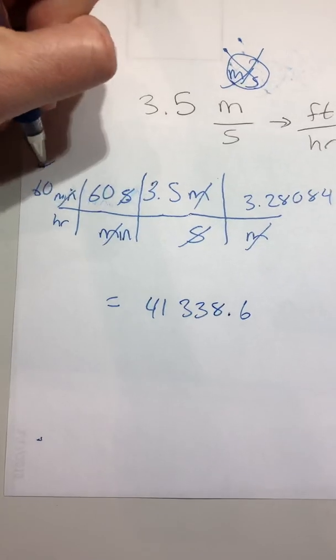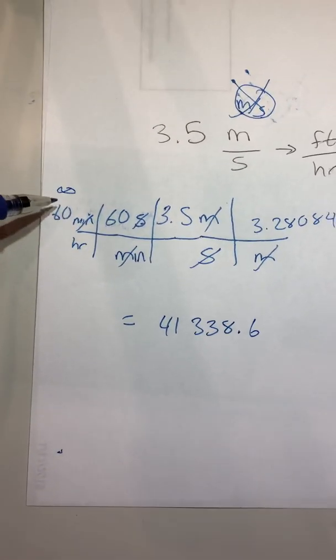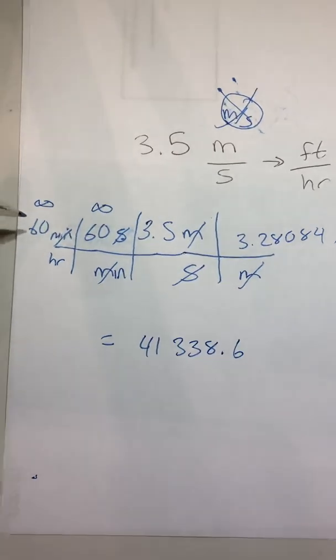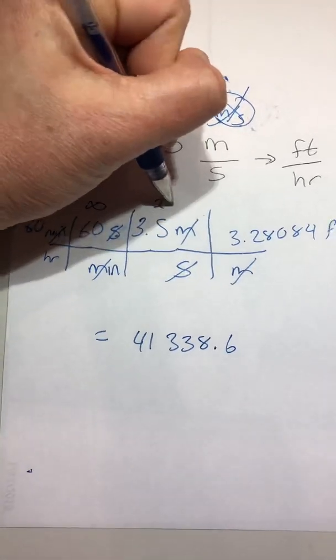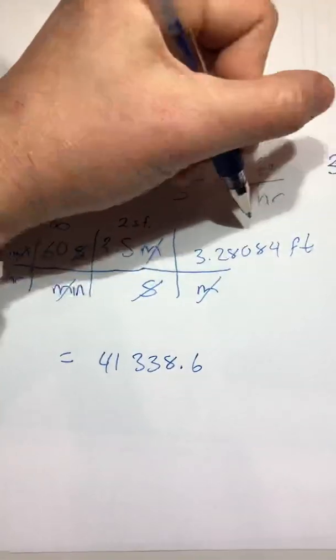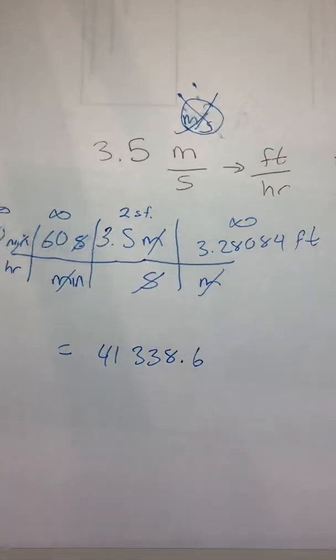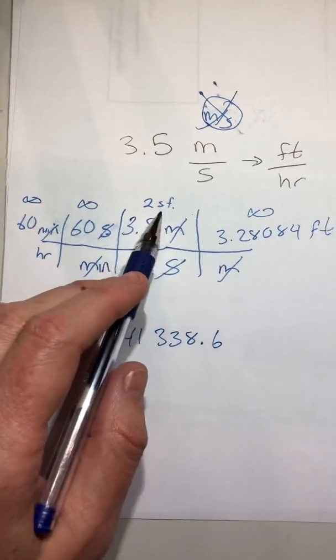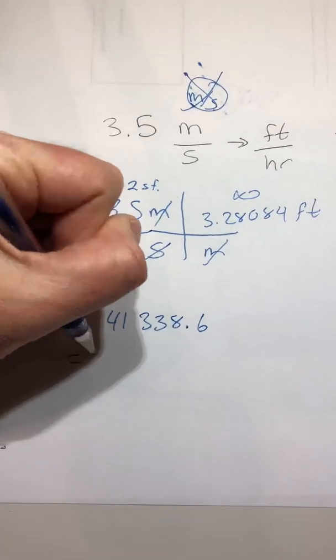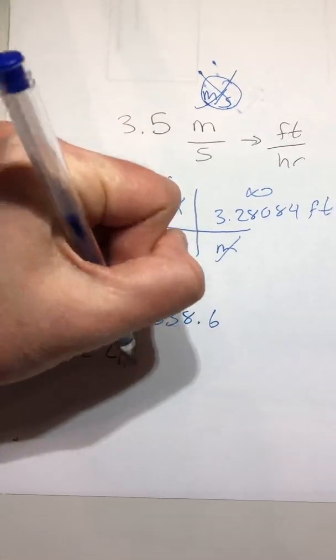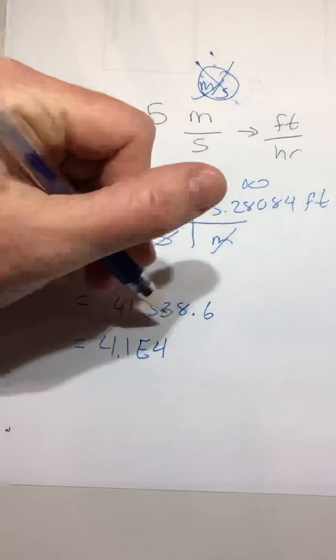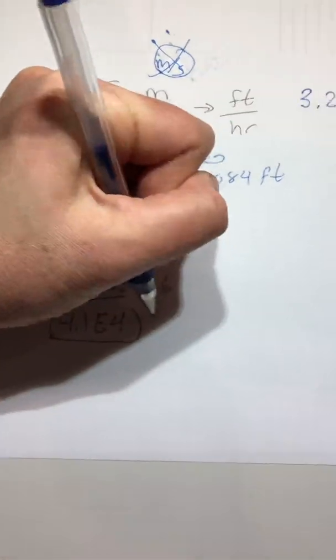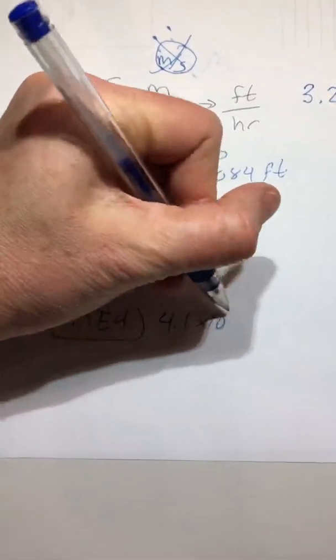This has an infinite number of sig figs because there are exactly 60 minutes in an hour. This is also infinite. This has two. This one can arguably be infinite. And our resulting amount of sig figs is going to be two. So our final answer is 4.1e4, or 4.1 times 10 to the 4.